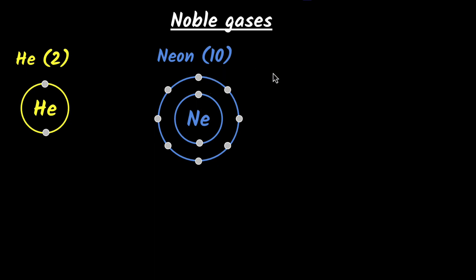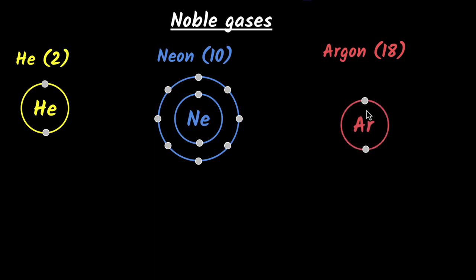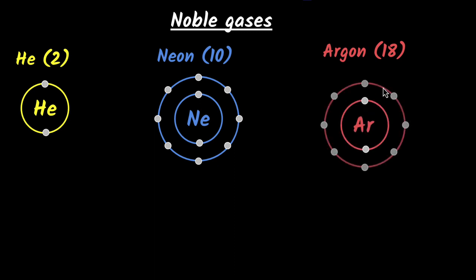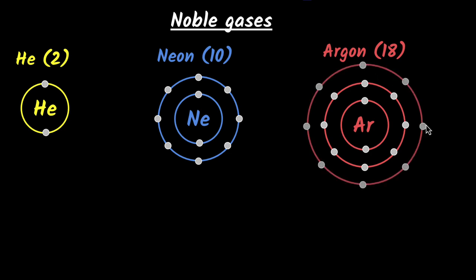What about argon, which has 18 electrons? Just like with neon, we start with two in the first shell, then eight in the next shell, and the remaining eight come in the third shell.